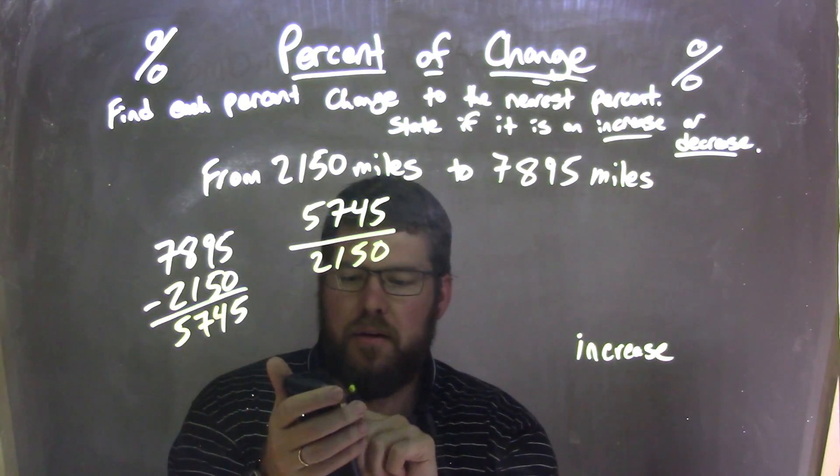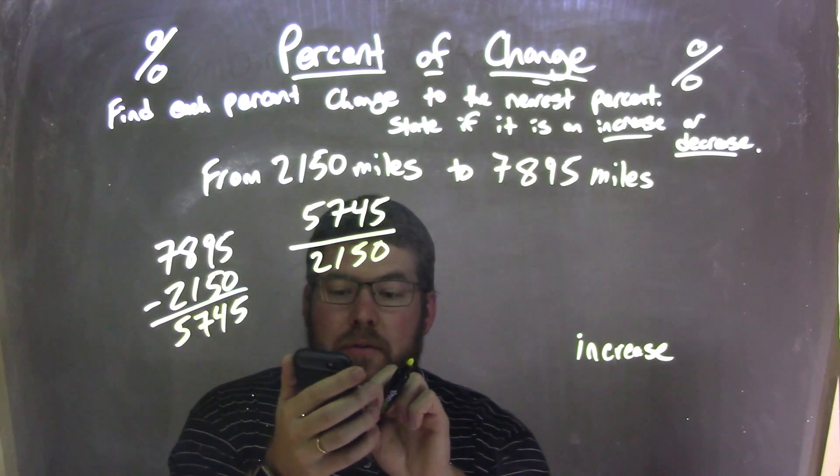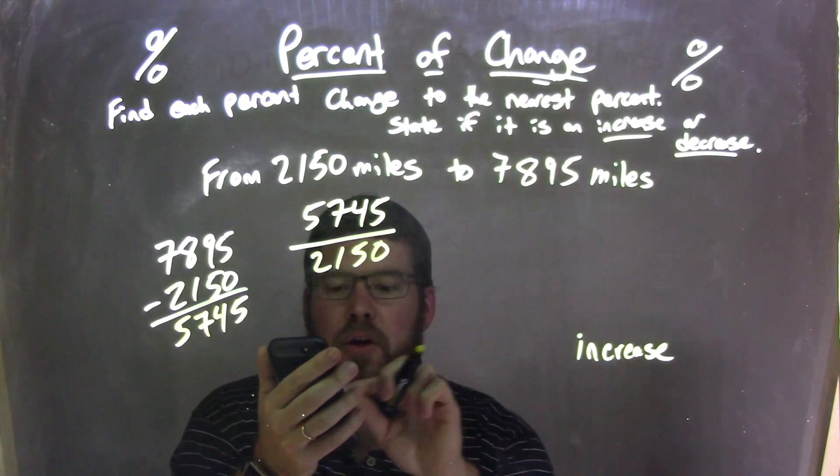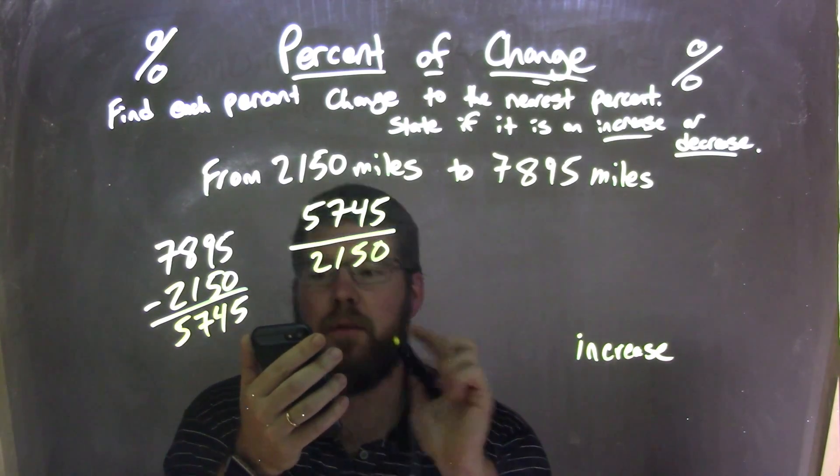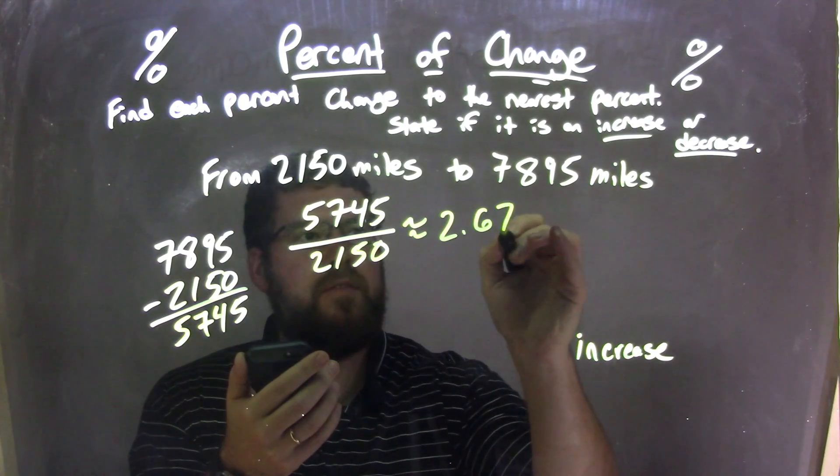Then I need to use my calculator here to get the decimal. I don't need to, but I'm going to. 5,745 divided by 2,150 comes out to be approximately 2.6721.